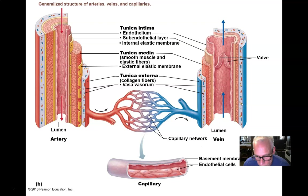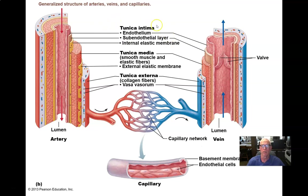So blood vessels — let's take a look at this generalized diagram of the structure of arteries and veins. There are essentially three layers to these blood vessels. The inner layer, called the tunica intima, consists of the endothelium — the simple squamous epithelial cells that line the vessels — and then there's a basement membrane, some connective tissue, the so-called subendothelial layer, and some elastic connective tissue.